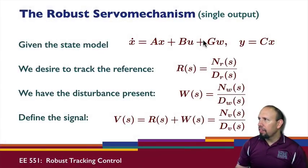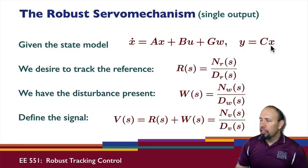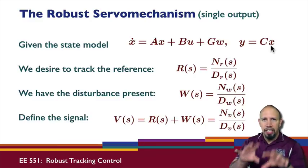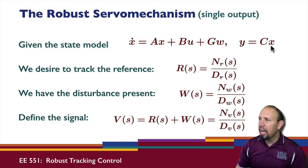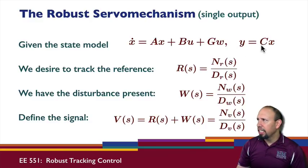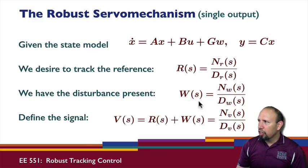Given a state model, notice we now have an additional disturbance input. We're assuming our system is strictly proper — that is, no D matrix — which is a pretty common assumption. It simplifies certain things, and it's very common to have D equal to zero. So we have our two signals: our reference signal and our disturbance.